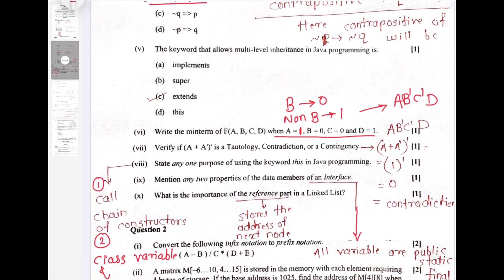Question number 7. Verify A plus A bar and whole bar is tautologic, contradiction or contingency. We have to solve it. We know A plus A bar is 1, and complement of 1 bar is 0. That is, it is contradiction. So question number 7 is contradiction.